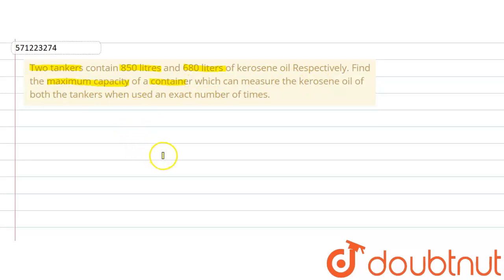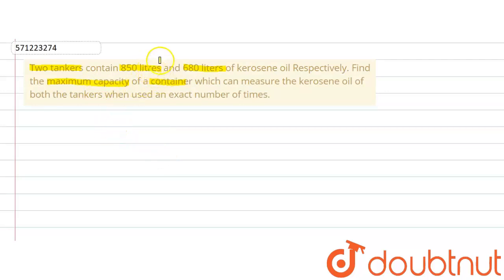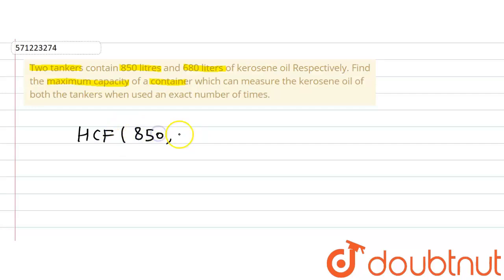We are required to find out the maximum capacity of a container such that, using that container, we can measure the oil contained in both the tankers. In such type of question, where we are supposed to find something of maximum capacity that can be used to measure some quantity, we are required to find out the Highest Common Factor, that is the HCF of both quantities. So here the maximum capacity of the container should be equal to the HCF of 850 and 680.